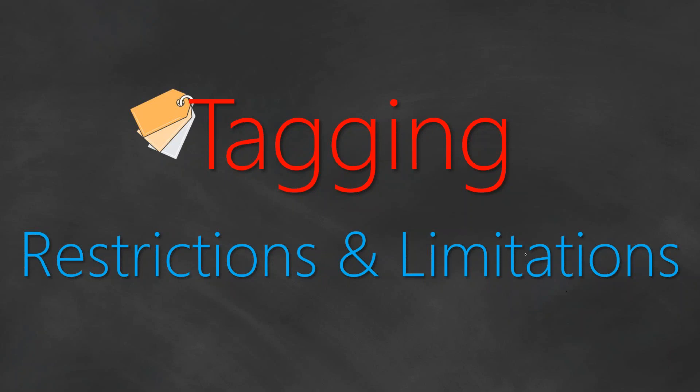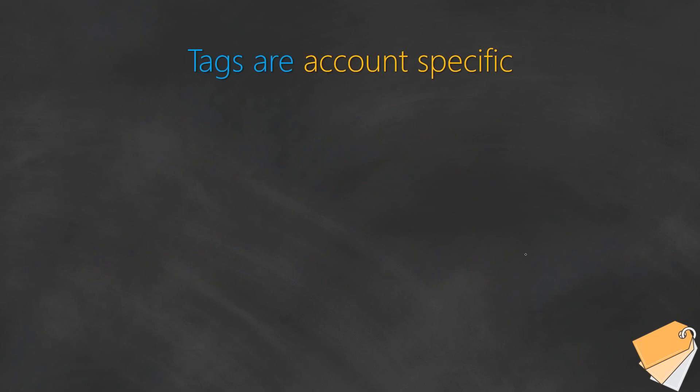One of the most important restrictions to remember is that tags are account-specific. If you have multiple accounts spread across different business units or across an application, you should remember that a tag in one account cannot be pulled into another account — you need to recreate it. If you want a common understanding of your application across accounts, I recommend using the same name or same identifier in multiple accounts so that you can have a horizontal view of your application everywhere.